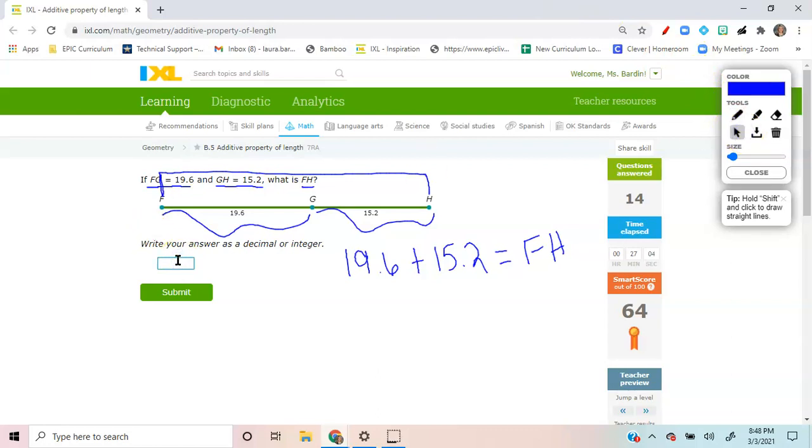34.8. Let's go ahead and answer that in there. 34.8. So F to H is 34.8. And we'll submit that.